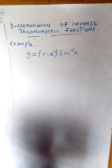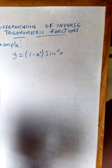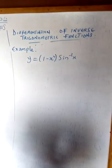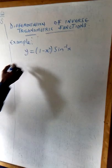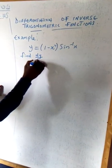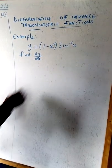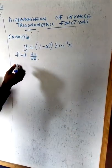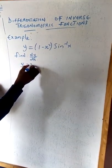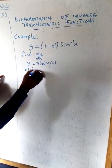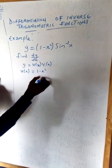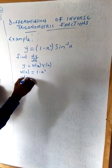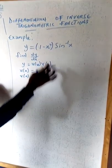We are going to attempt one question on inverse trigonometry functions. We are given that y equals (1 minus x squared) times arcsin(x), and we have to find dy/dx. Looking at this function, two different functions are products of each other: u(x) = 1 minus x squared, and v(x) = arcsin(x). These two functions are multiplying each other.